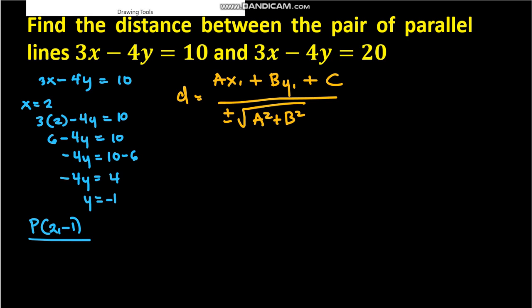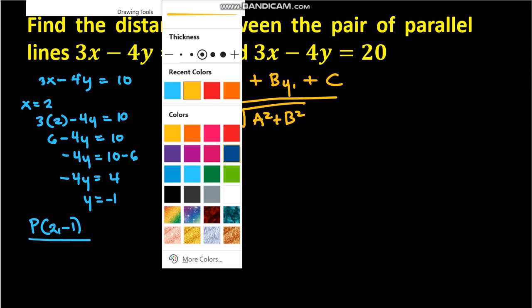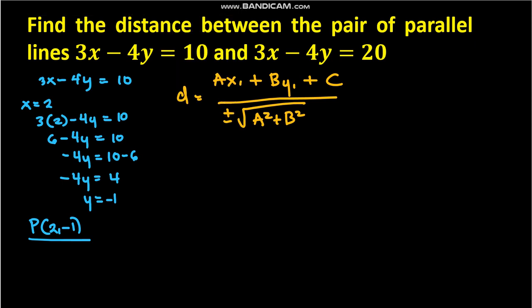We can now use this formula with 3x - 4y = 20. First, rewrite it as 3x - 4y - 20 = 0. So A = 3, B = -4, and C = -20.